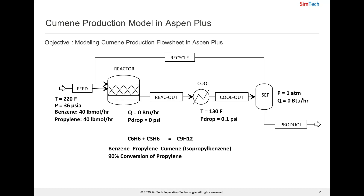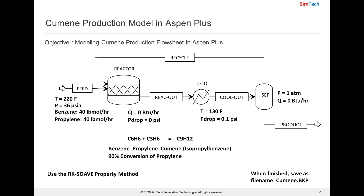Cumene is produced by reaction of benzene and propylene. The flowsheet is modeled using a reactor, cooler, and flash models. For this simulation, the KSOAVE property method is used. Once simulation is completed, the file is saved as cumene.bkp.